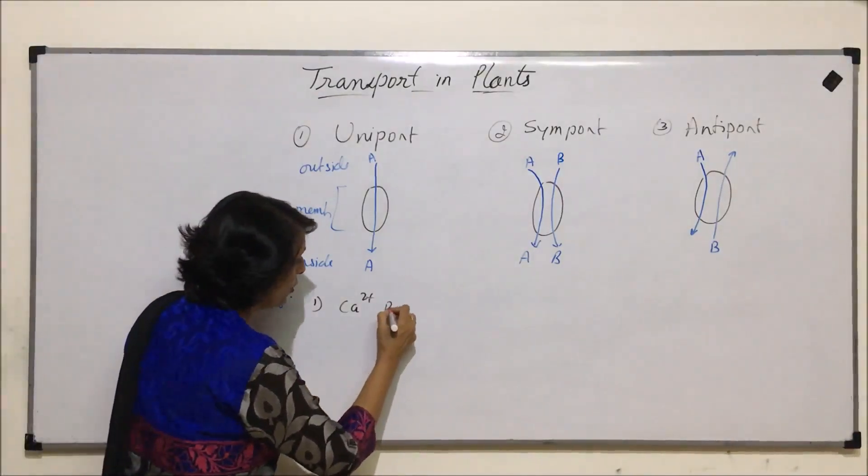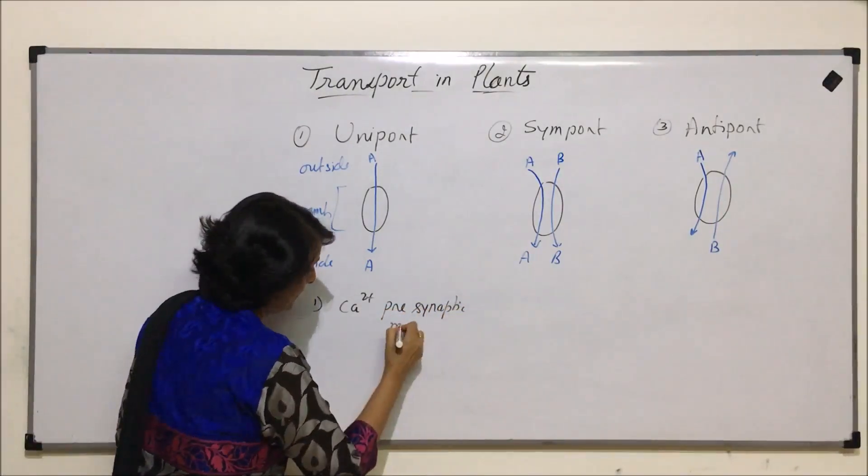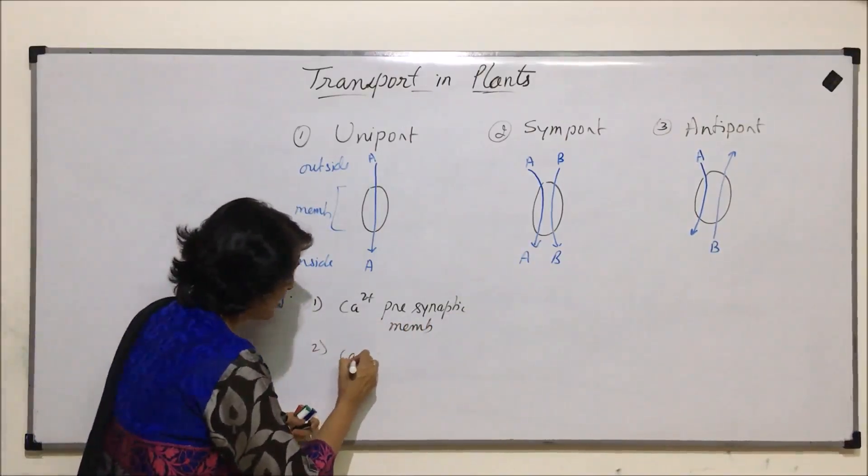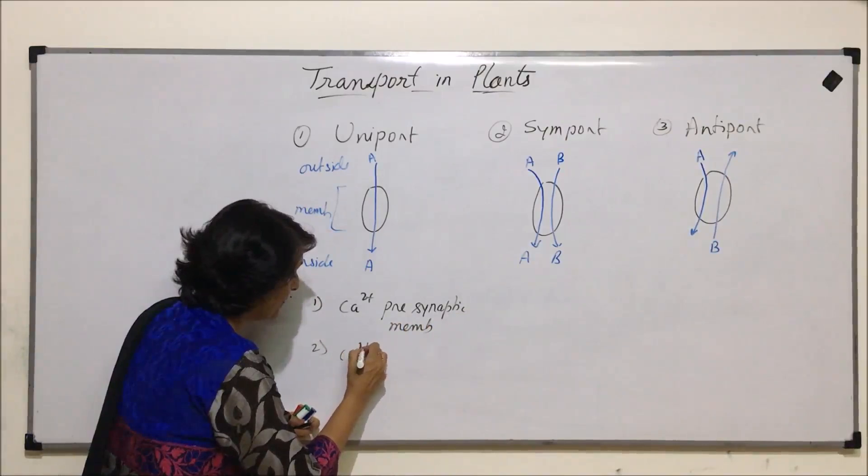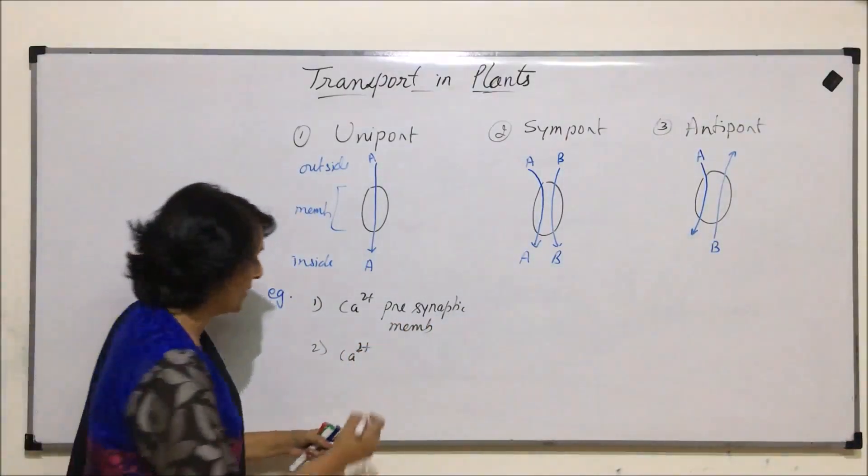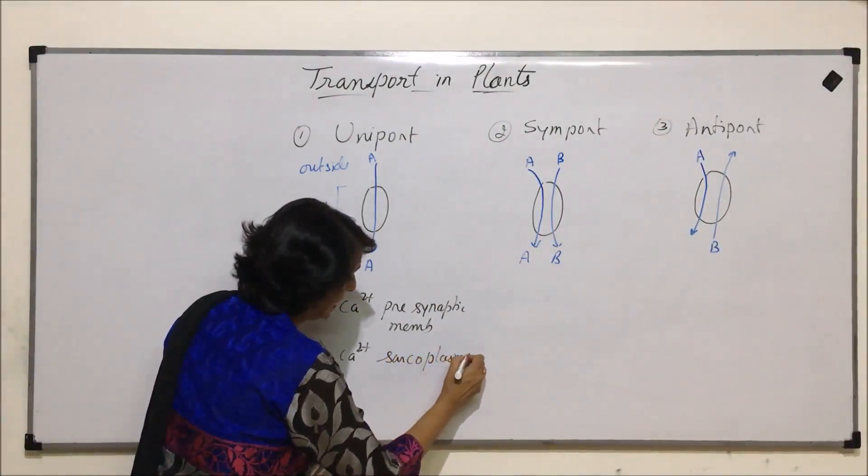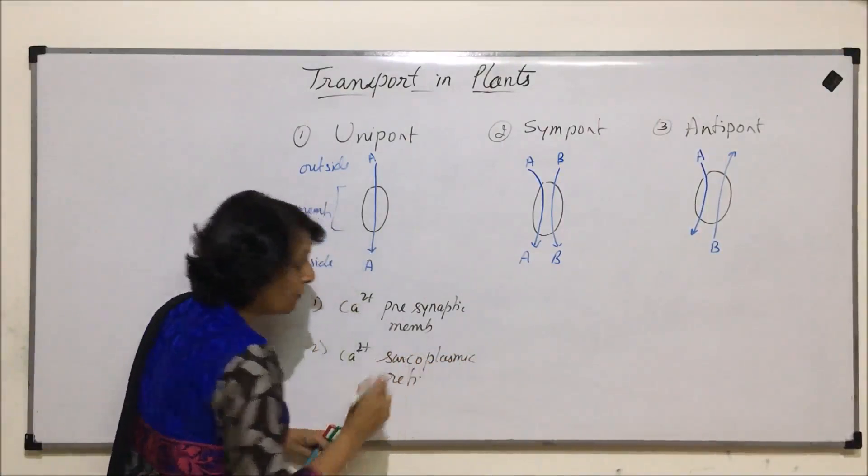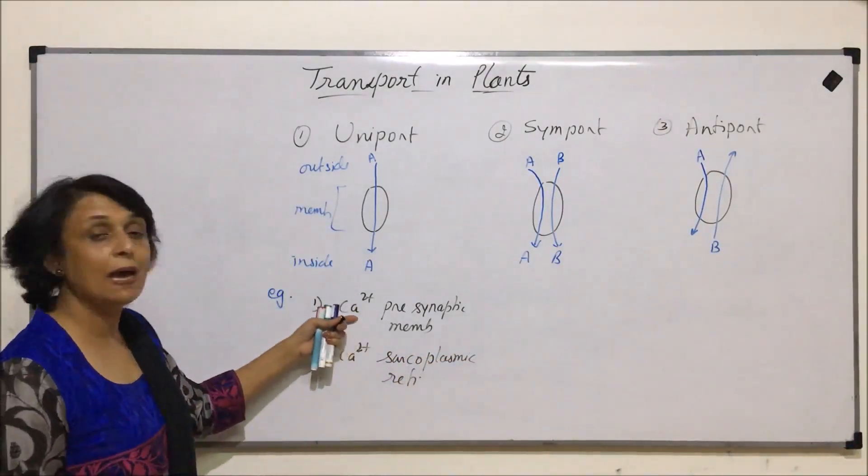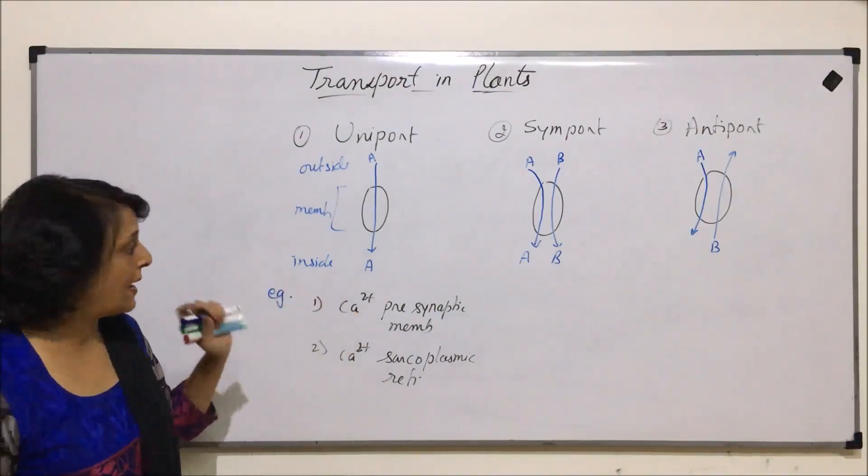So calcium ions through presynaptic membrane. And second example is again of calcium ions: calcium ions which are released from sarcoplasmic reticulum during muscle contraction. So from sarcoplasmic reticulum in the muscle cell. This happens during muscle contraction. This happens when the impulse is getting transferred from one neuron to the other through synapse.